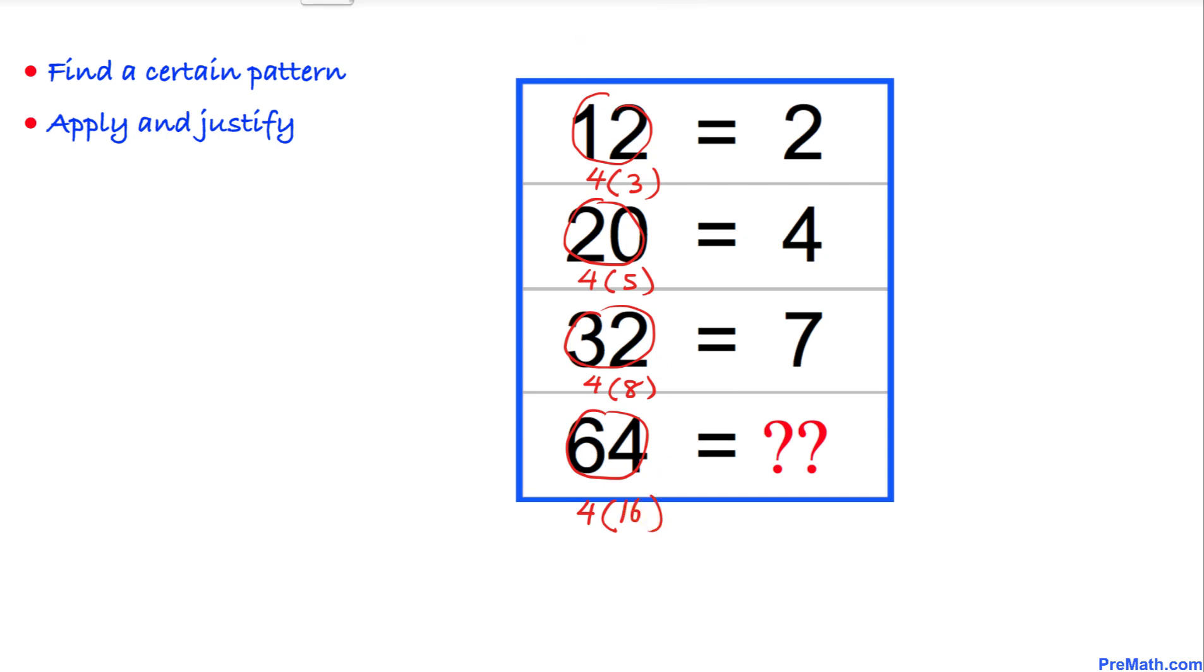And now let's see the connection between 3 and 2, 5 and 4, 8 and 7. And we can see that this number is simply 3 minus 1 here. This is 5 minus 1, this number. And this is simply 8 minus 1.